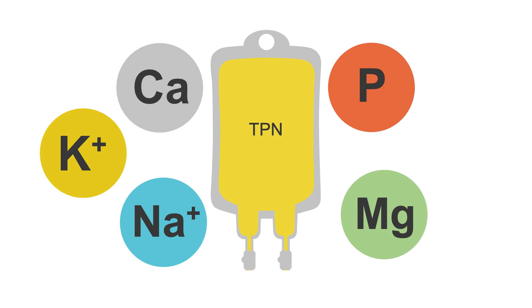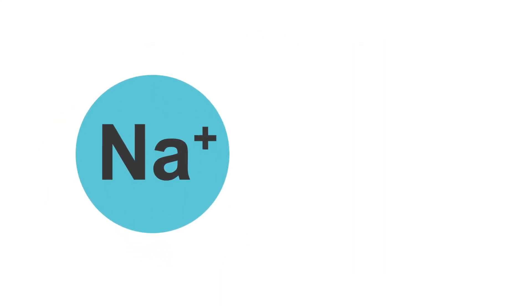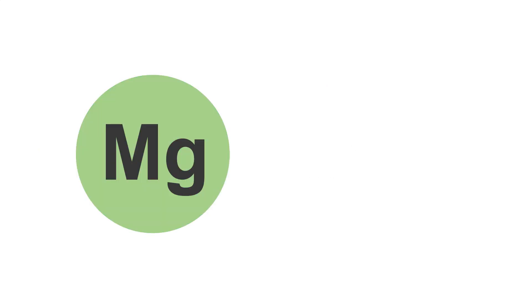For example, sodium may be available as acetate, chloride, or phosphate. Magnesium may be available as sulfate or chloride, and the list goes on.